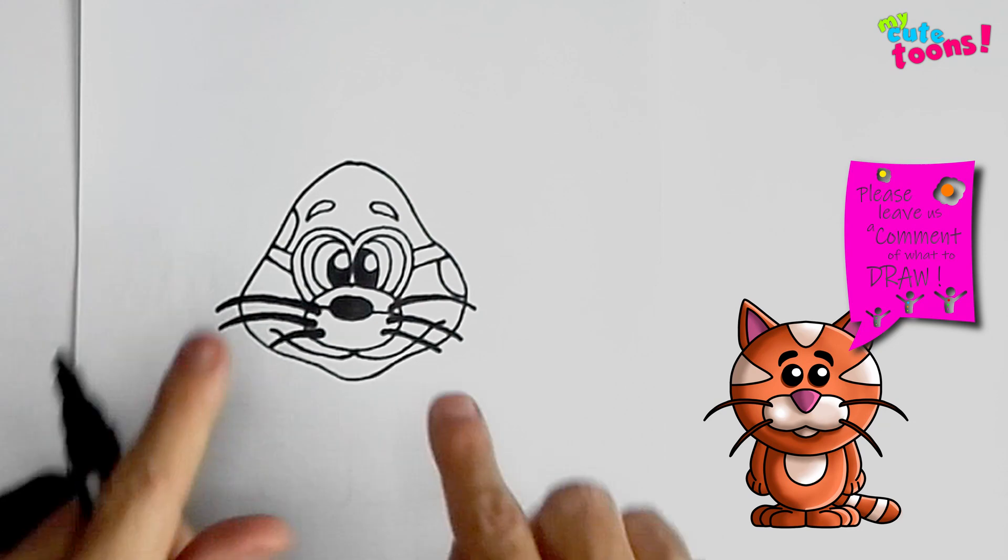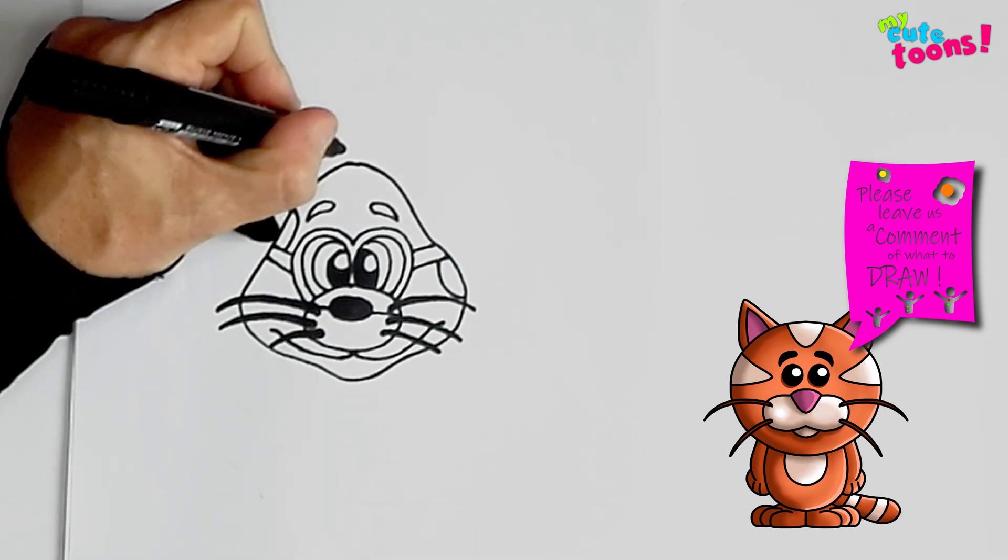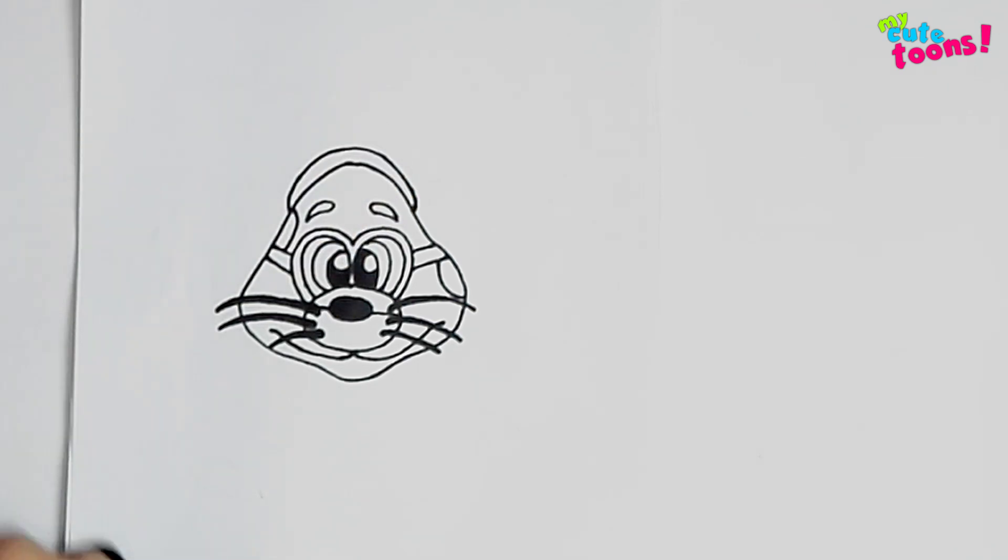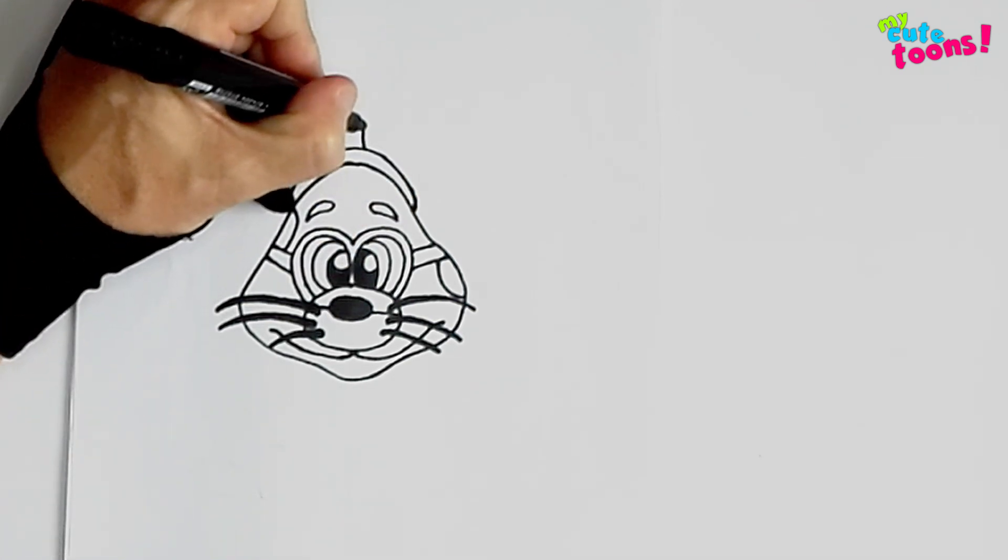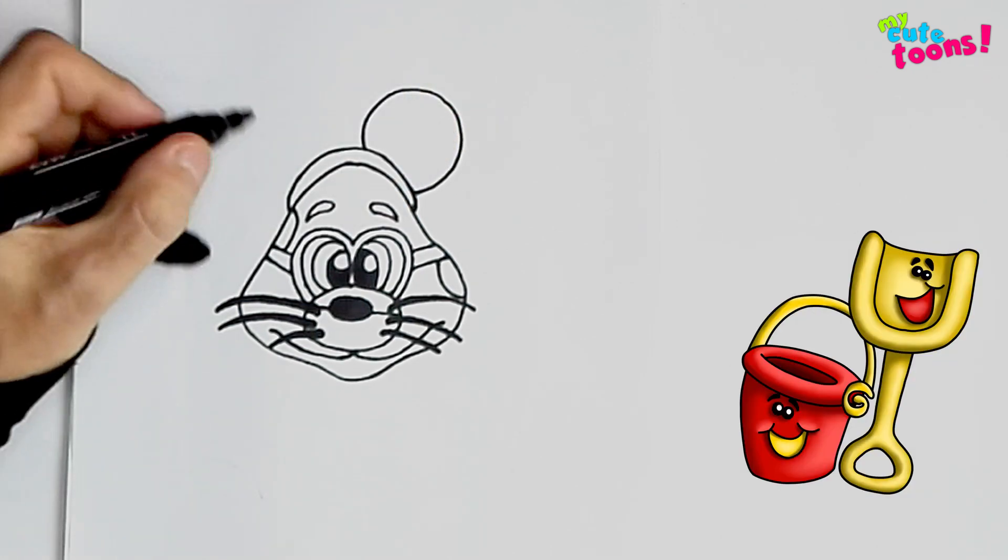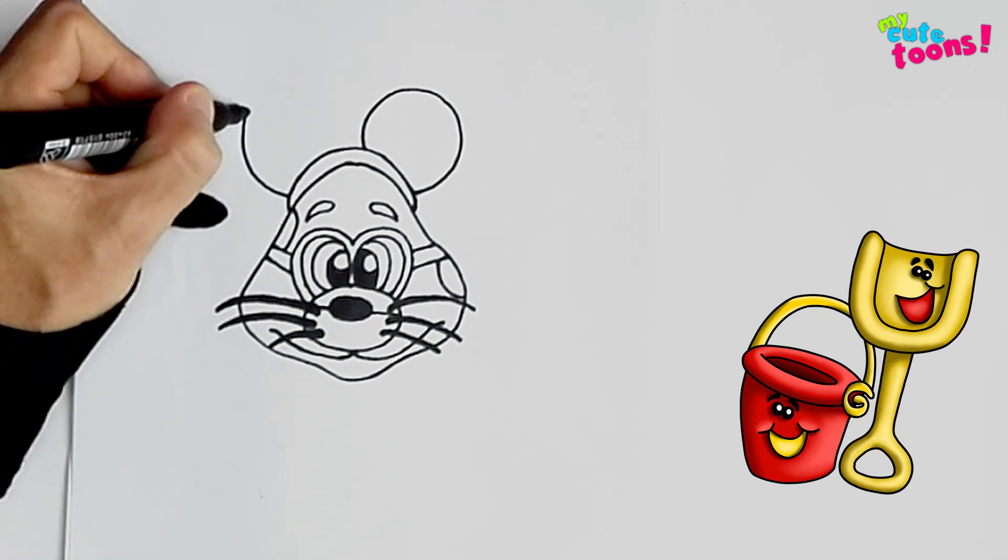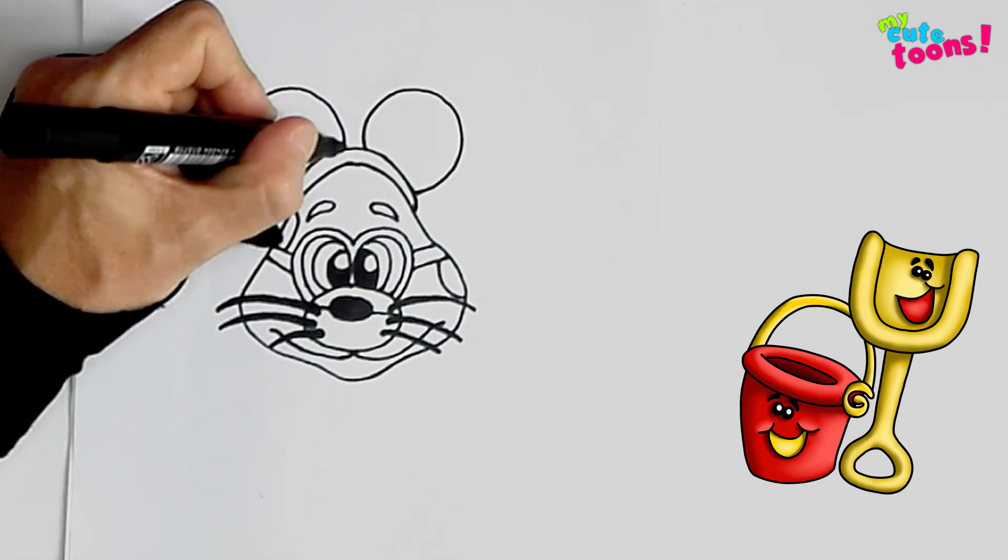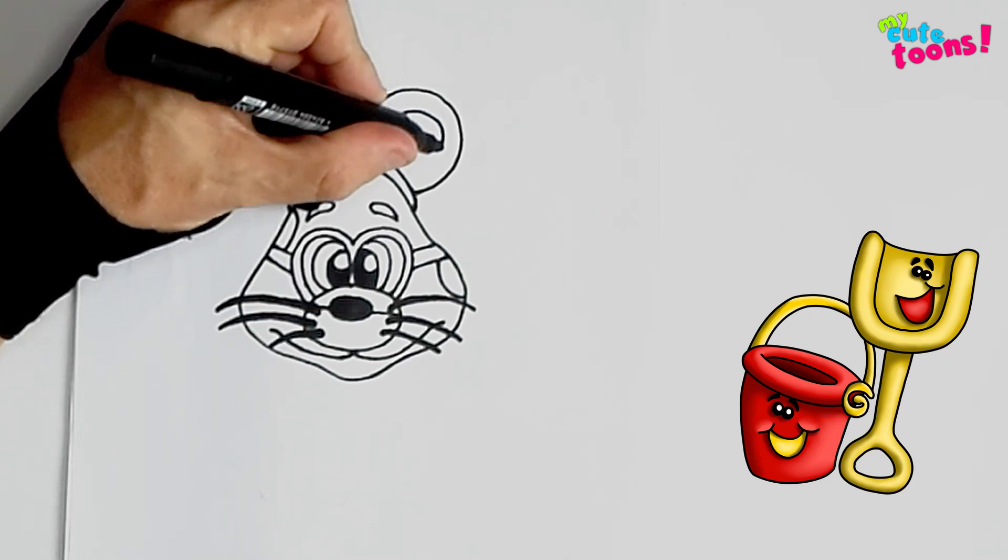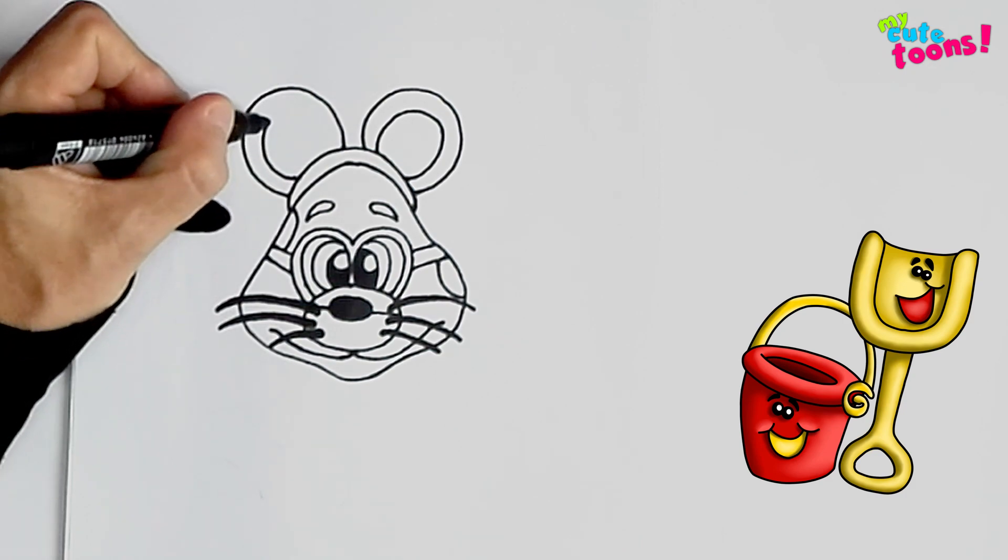Now on top we're going to draw the mouse ears. So you can draw a little band on top of Magenta's head. And then we're going to draw two nice big mouse ears. There's one ear. And there's the other ear. And then let's finish it off by drawing the inside ears. There's one, and there's the other.